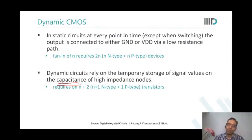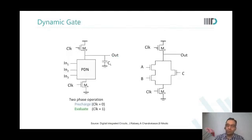What does this mean? You have, for example, a dynamic gate and you have a clock also going to it. When Clk equals zero, this PMOS is on, this NMOS is off, output goes to one. This phase is called the precharge phase.